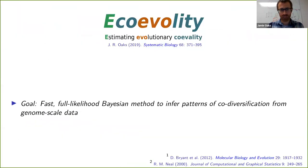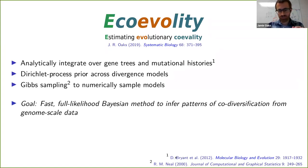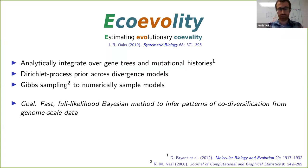What we did in my lab group is develop a new method called EcoEvolity. The goal is to do a full likelihood Bayesian method that's fast and uses genome-scale data. We do that by taking advantage of some really nice mathematical work by David Bryant and colleagues that allows us to analytically integrate over all possible gene trees and all possible mutational histories along those gene trees — we integrate all that out when we calculate the likelihood, so we don't have to deal with those gene trees in our computational machinery.